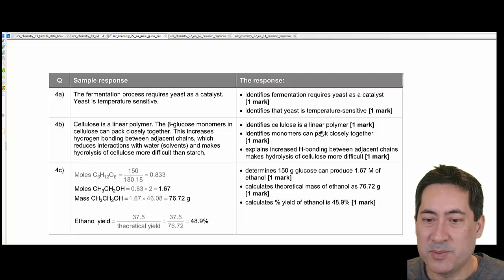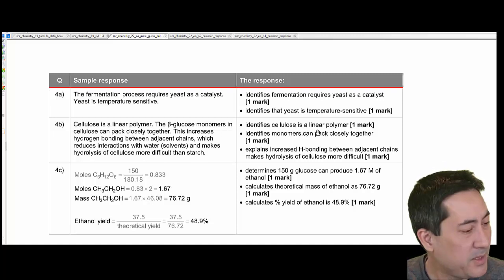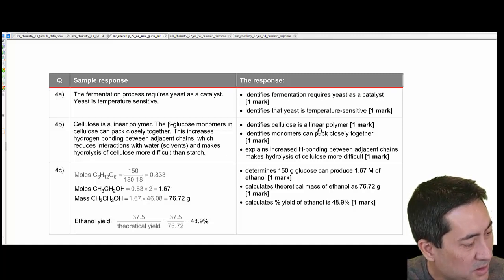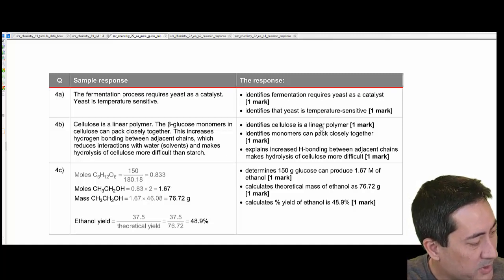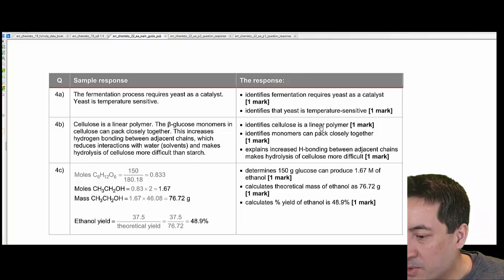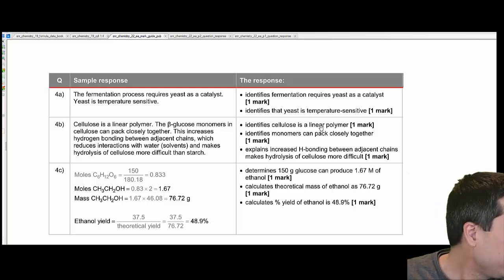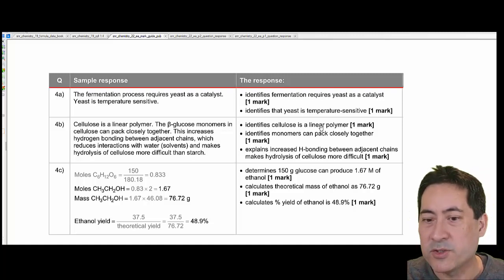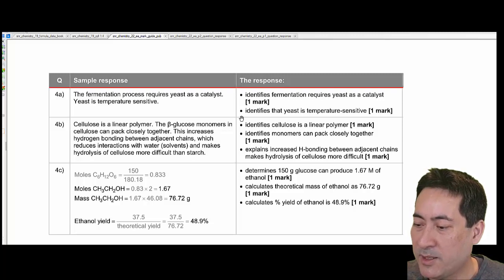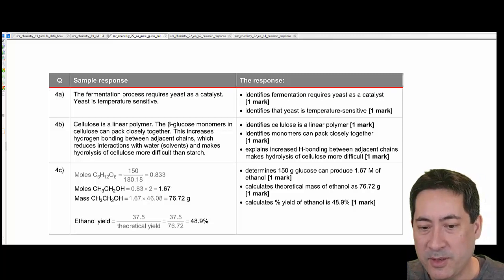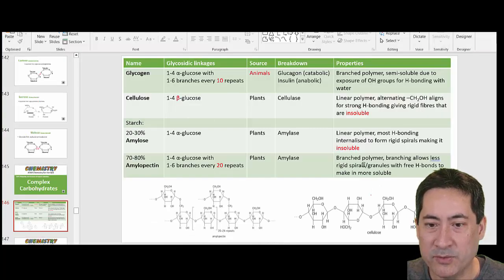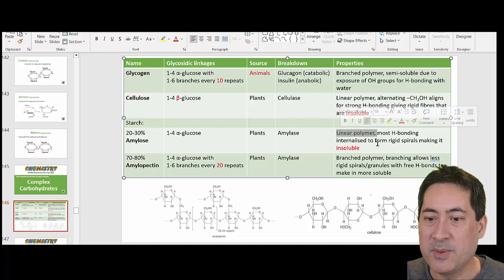Explain why cellulose is harder to convert to glucose than starch. I'd be a lot more comfortable if it was just two marks. If you look at the mark scheme, it says identify cellulose as a linear polymer. I'm happy that the monomers pack closely together and there's increasing hydrogen bonding. But if you look at your syllabus, it doesn't really talk about linear and branch polymers, the differentiation between those complex carbohydrates.